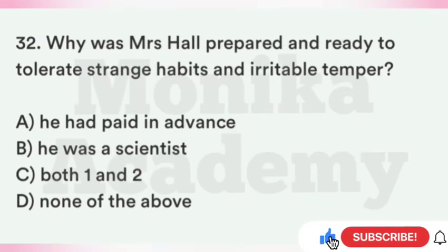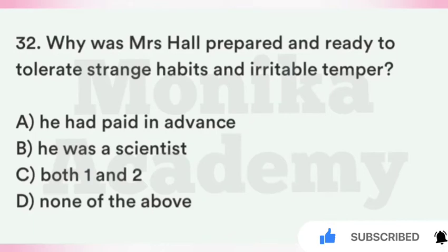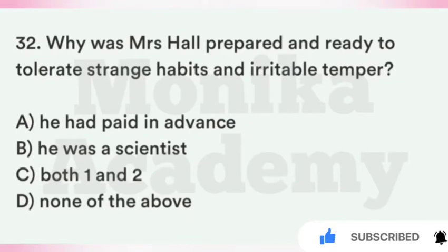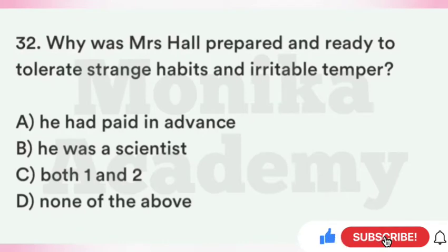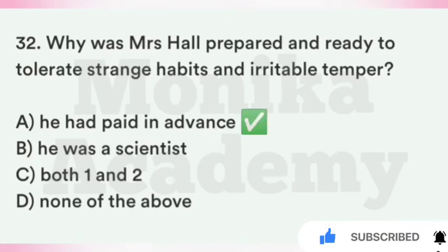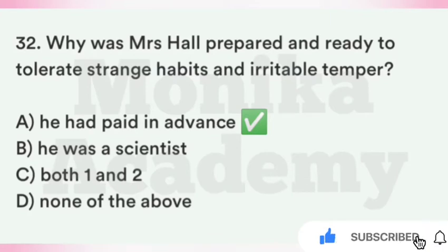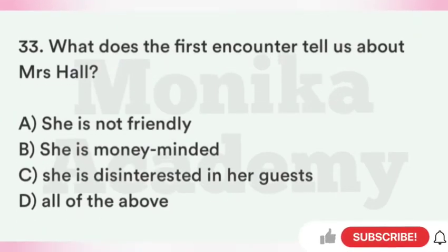Question 32: Why was Mrs. Hall prepared to tolerate strange habits and irritable temper? Option A: He had paid in advance. Option B: He was a scientist. Option C: Both 1 and 2. Option D: None of the above. The correct answer is A, He had paid in advance — Griffin ने सारा rent advance में pay कर दिया था, और Mrs. Hall एक money-minded lady थी, इसलिए वो उसकी सब आदतें सहन करने को तैयार थी.